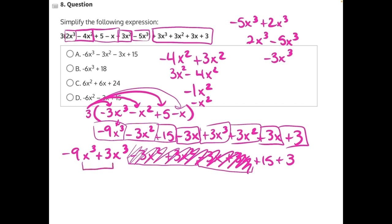Negative 9x cubed plus 3x cubed will give us negative 6x cubed, and then 15 plus 3 will give us 18, matching answer choice B as our correct answer.